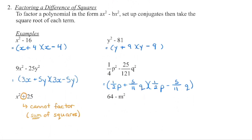This next one is a difference of squares — we are subtracting two perfect squares. We set up our conjugates, one is a plus and one is a minus. The square root of 64 is 8, the square root of m squared is just m. Then foil it back to make sure you correctly factored it.